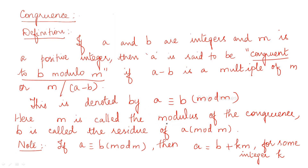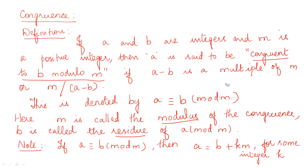m is called the modulus of the congruence. b is called the residue of a mod m. And as a property: if a is congruent to b mod m, then since a minus b is a multiple of m, we can write a minus b as k into m. So a is equal to b plus km.